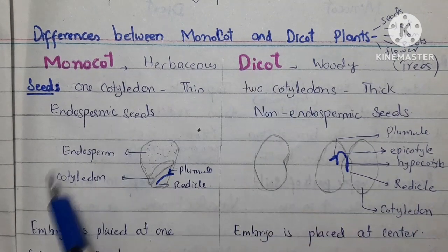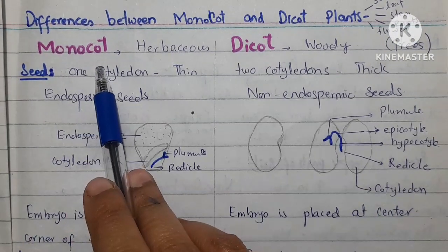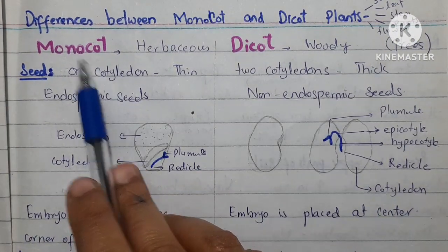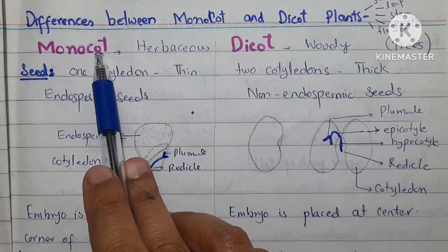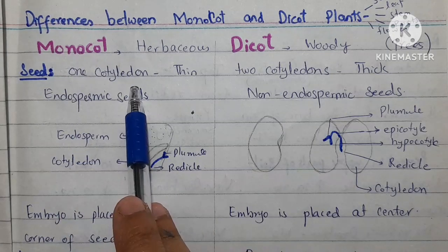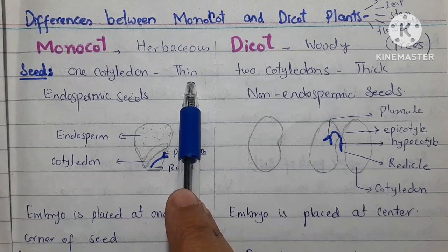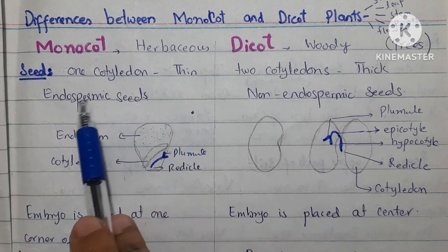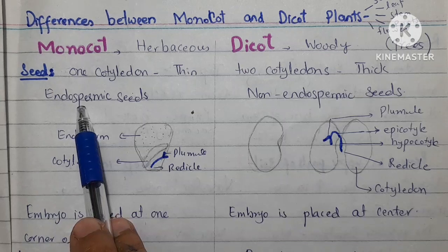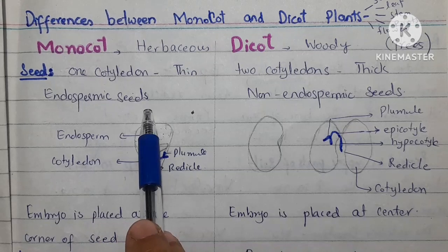There are differences between the seeds. In the case of monocot, as indicated by its name, there is one cotyledon, and this cotyledon is thin. Endosperm still exists in monocot seeds, so we call these seeds endospermic seeds.